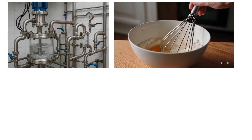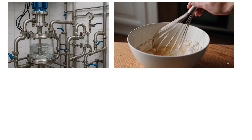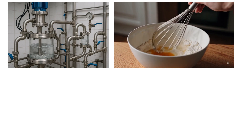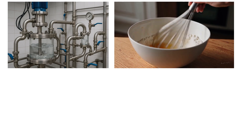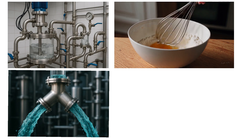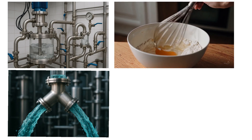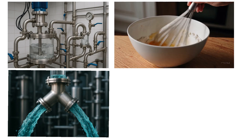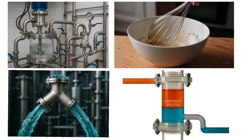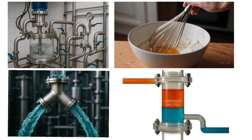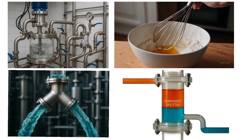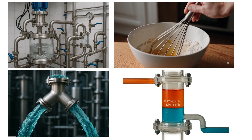A mixer combines two or more input streams into one homogeneous outlet stream. The outlet temperature and composition depend on mass and energy balances, plus the property package selected. A tee is a simple device that splits one stream into two or more outlet streams based on specified flow ratios. A component splitter is different — it separates individual components according to split fractions, without performing a full separation calculation like a distillation column.